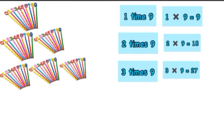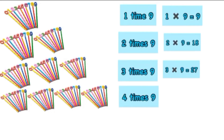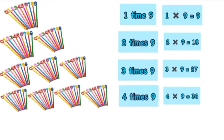In the next step, in three sets of nine pencils, when we add one more set of nine pencils, it will become four sets of nine pencils. So we can read it as four times nine and write it as four multiplied by nine, and it is equal to 36.